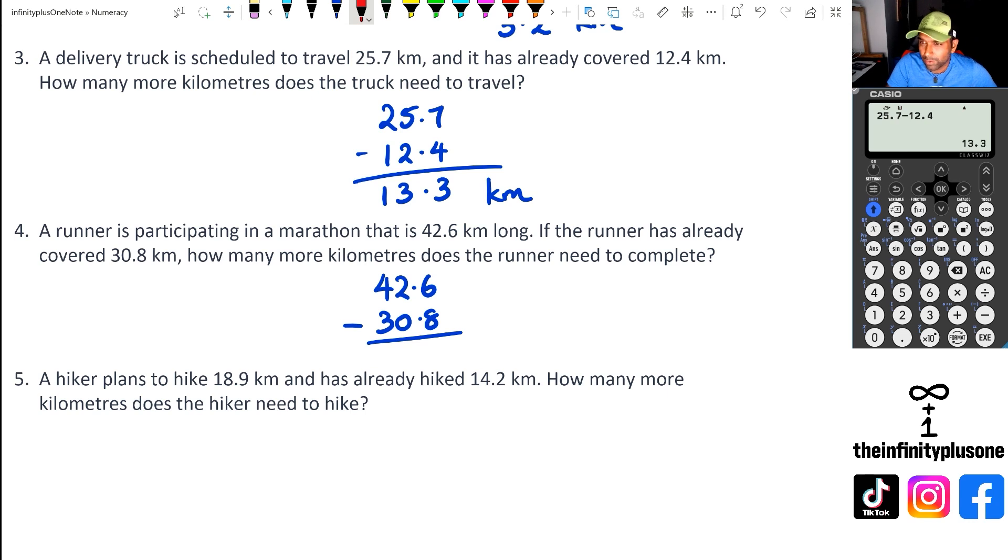So 6 take away 8, obviously is not possible. Borrowing the 1 from the 2. So I've got 16 take away 8. That's going to be 8. 1 take away 0 is 1. 4 take away 3 is 1, which means 11.8 kilometers for this runner to go. Now, I think I remember that run. 42.6 minus 30.8. There we go. 11.8 Ks.